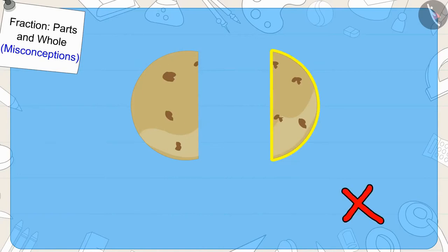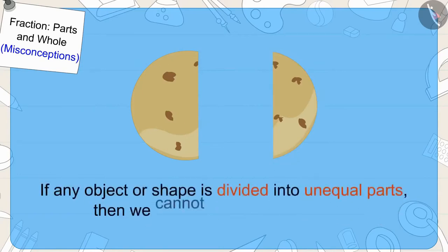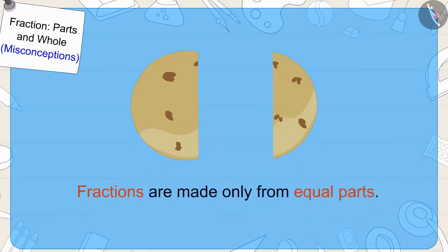Exactly! The fox did not give half part to Babban. The fox did not divide the chapati into two equal parts. So the portion that Babban got was not half of the chapati. Children, if any object or shape is divided into unequal parts, then we cannot write it as a fraction. Fractions are made only from equal parts.